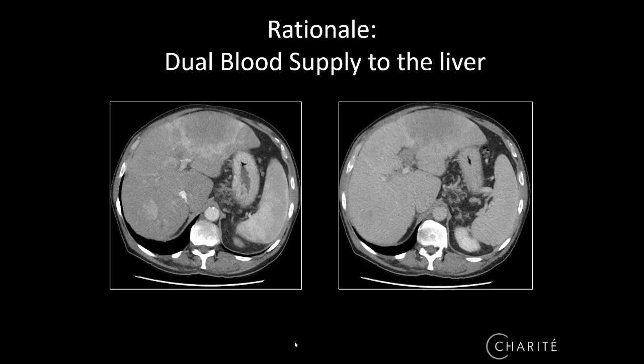We heard also in the talks before a lot about the rationale of how we can treat by embolization malignant tumors to the liver. This is because of the dual blood supply, with mainly arterial perfusion of malignant tissue, while the healthy liver tissue gets support from the portal vein.